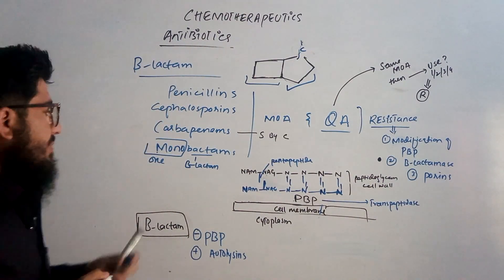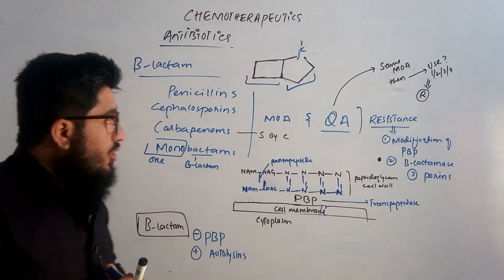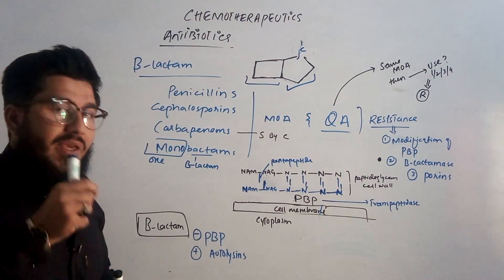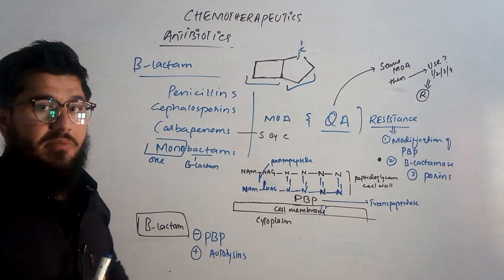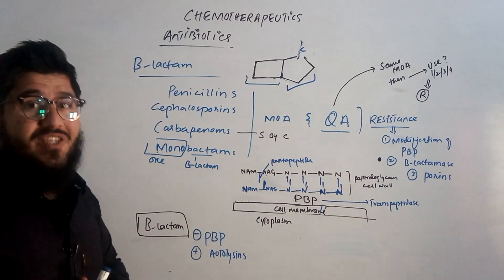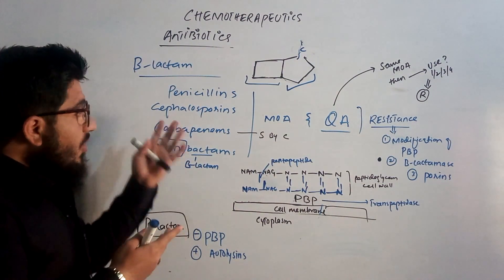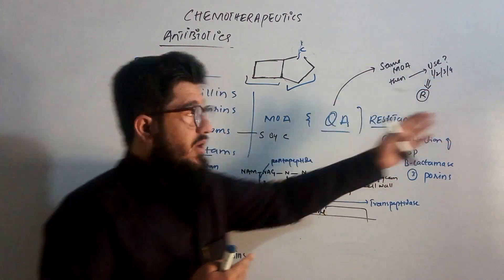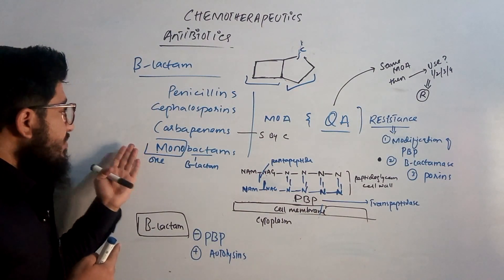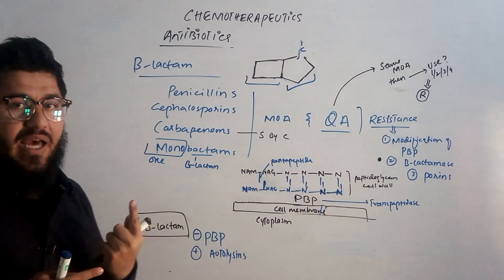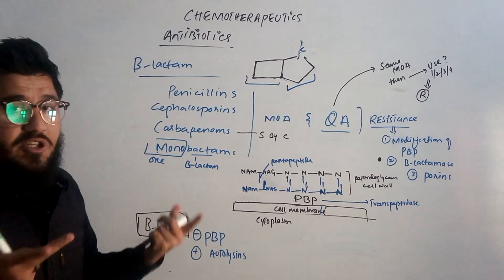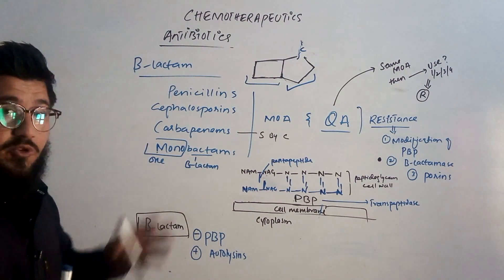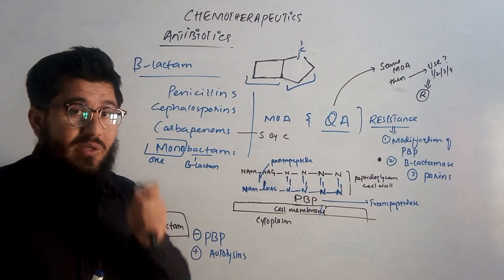Coming to the mechanism of action — they all have the same mechanism of action because of the beta-lactam ring. And here also comes the question students ask time and again: if they have the same mechanism, what is the need to use all four — penicillins, cephalosporins, carbapenems, monobactams? Why not use just a single antibiotic like penicillin?